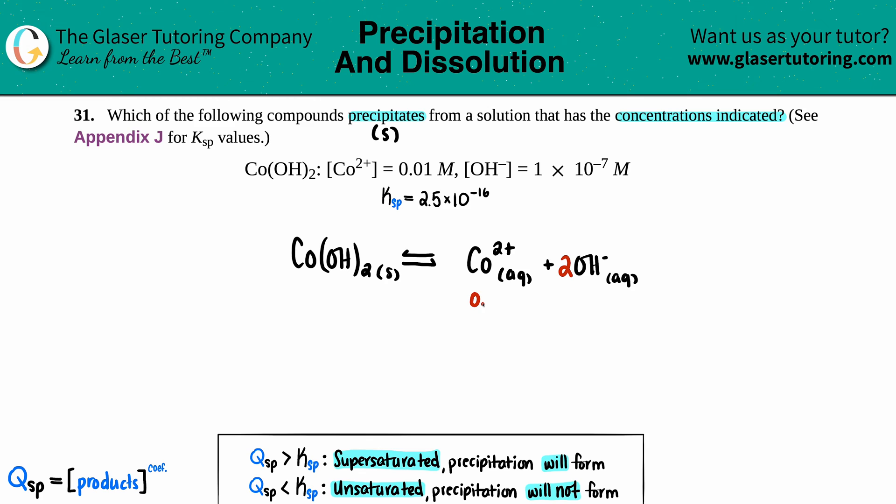The cobalt was 0.01 M and the hydroxide was 1×10^-7. Don't be tempted to multiply it by 2 because you see a 2 in the balanced equation. This is the concentration you have, no more, no less. That's for all the OH- in the solution.